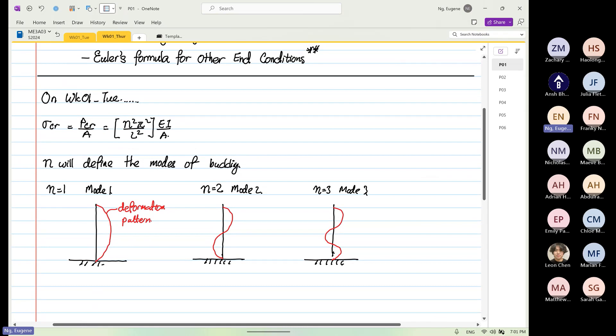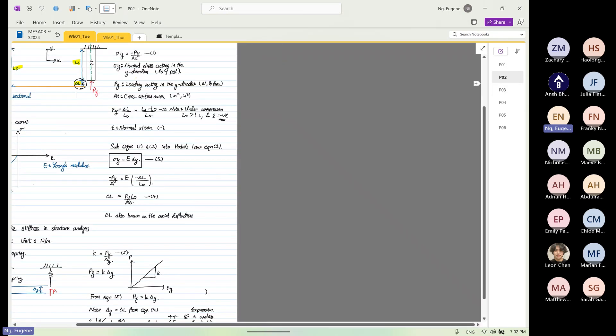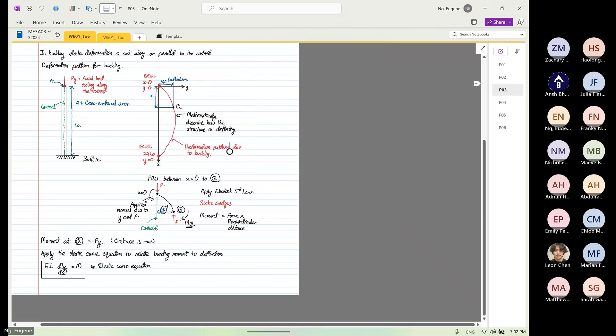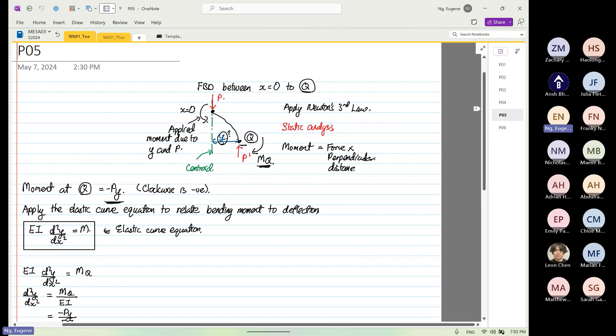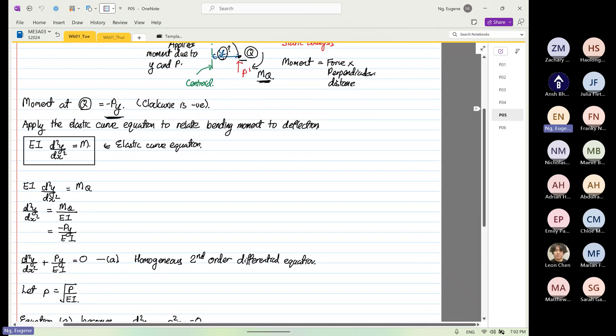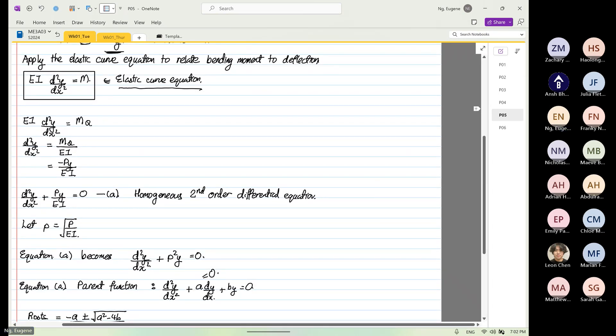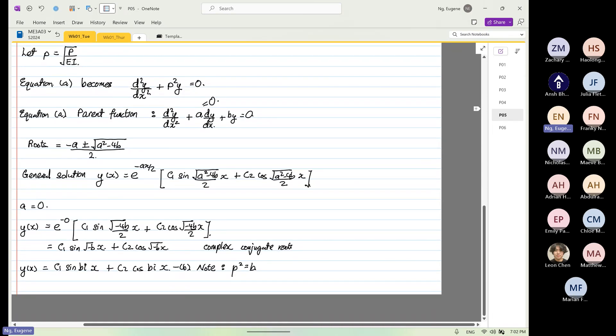So just to quickly recap, we use the second order homogeneous differential equation. We started by formulating the free body diagram. Just quickly recap, we started formulating our free body diagram, which is this. We formulate our free body diagram and then we apply the elastic curve equation.